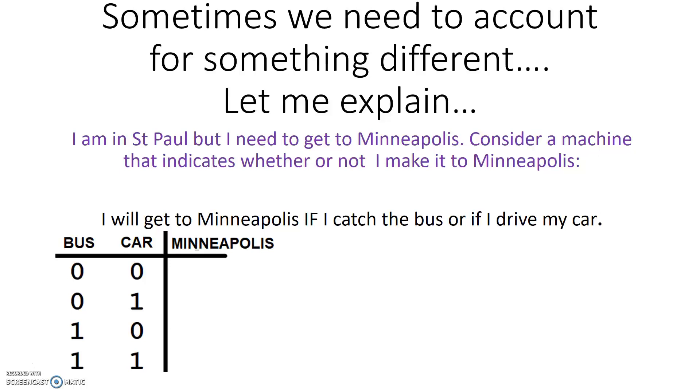A zero on bus indicates that I did not take the bus. A one on bus indicates that I took the bus. Similarly, a zero on car indicates that I did not take the car, or I did not drive the car, and a one indicates that I did drive the car.